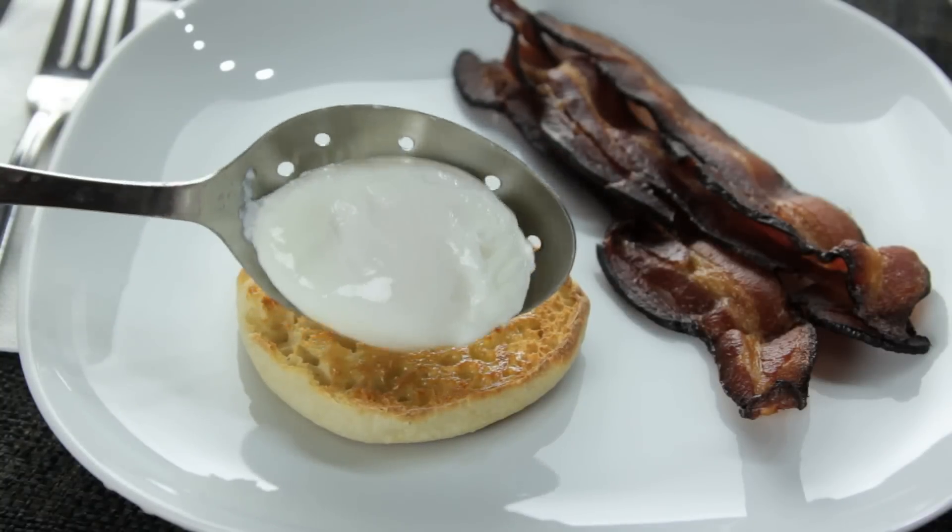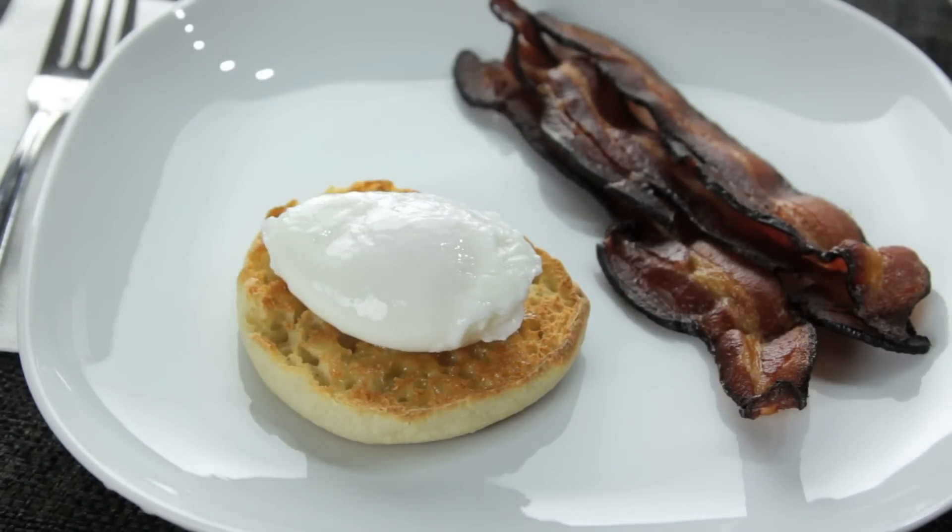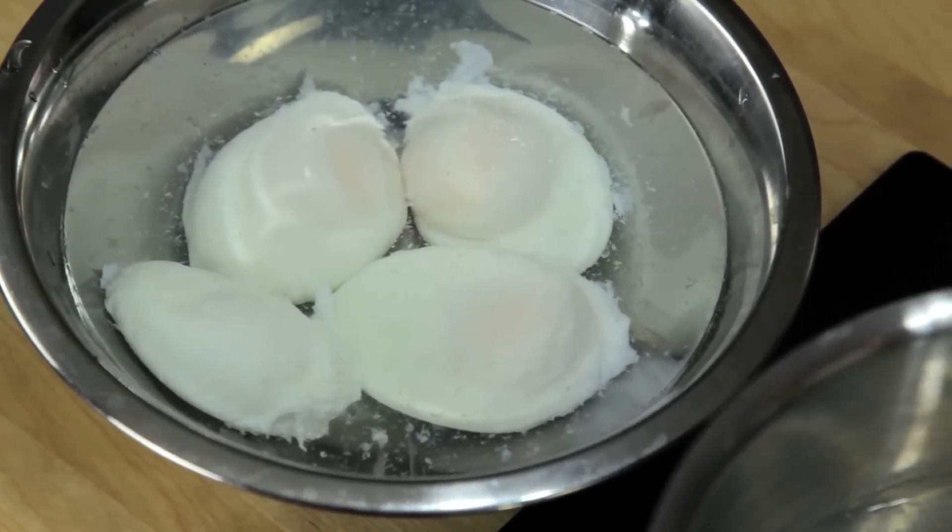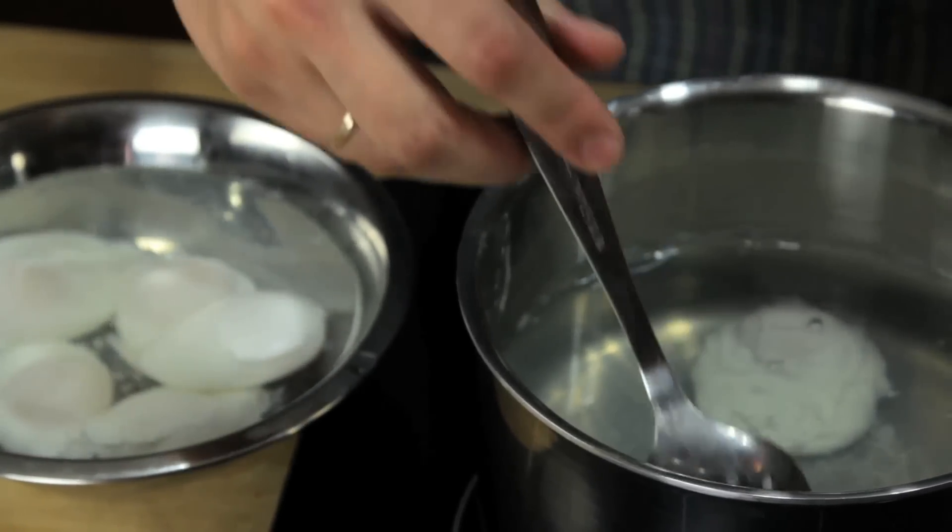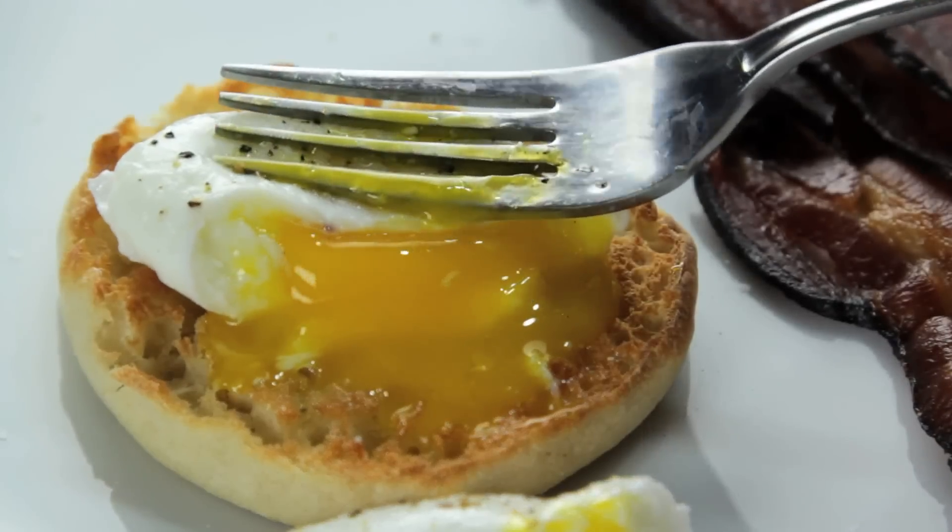After about three and a half to four minutes, this is what you've got. You can even cook them ahead of time and store them submerged in cold water in the fridge for up to a few days. To reheat them, just transfer them to a bowl of hot water for a few minutes just before serving. Food Lab, signing out.